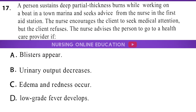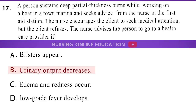Question 17: A person sustains deep partial thickness burns while working on a boat in a town marina and seeks advice from the nurse in the first aid station. The nurse encourages the client to seek medical attention, but the client refuses. The nurse advises the person to go to a health care provider if: A. Blisters appear. B. Urinary output decreases. C. Edema and redness occur. D. Low-grade fever develops. The answer is option B: Urinary output decreases.